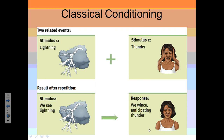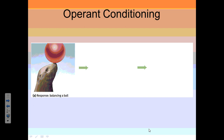First off, classical conditioning — what is it? It's when we take a once-neutral stimulus and combine it with a natural, or unconditioned, stimulus so many times that we actually form a response to that once-neutral stimulus, making it a conditioned stimulus. For example, lightning and thunder: we know thunder always follows lightning. If we're naturally scared of thunder, we may form a response to lightning even though it's not what originally scared us — it's the association that drives the response.